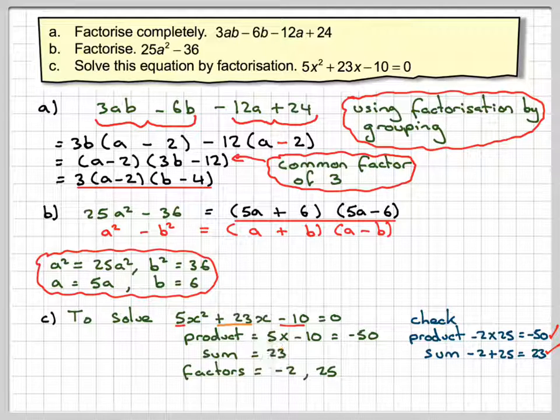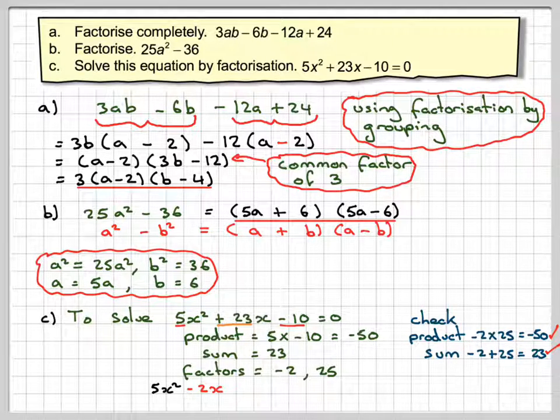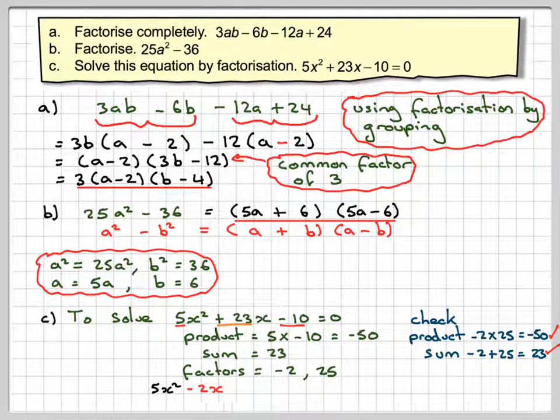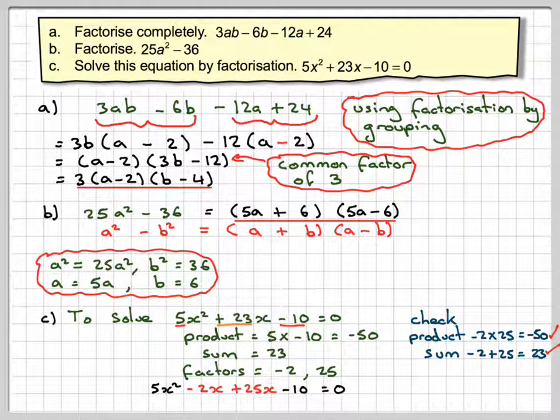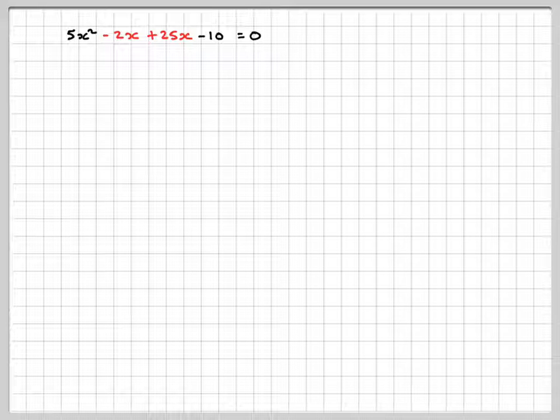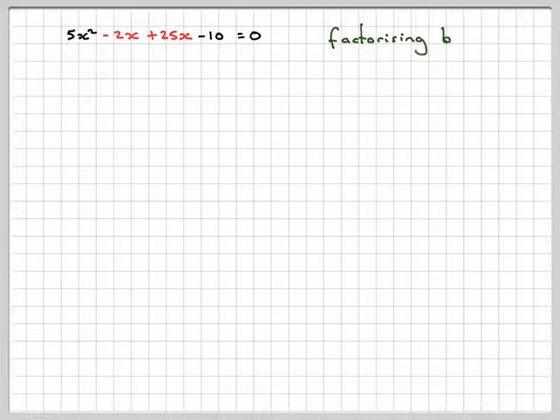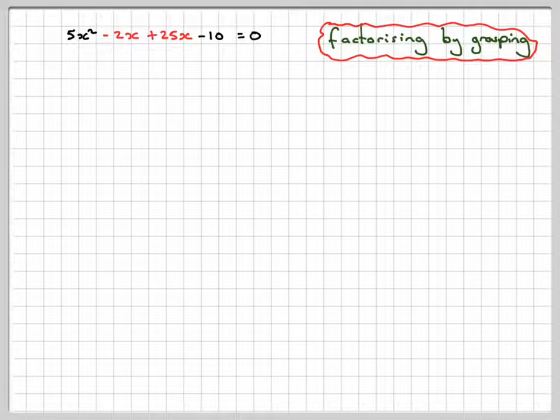Then you write down the quadratic equation. It's 5x squared, and you split the middle term up into minus 2x plus 25x, and then there's minus 10 is equal to 0. It doesn't matter which way round you write these two. Right, so going over here, you then do what's known as factorising by grouping, what we've already done once already in this video.